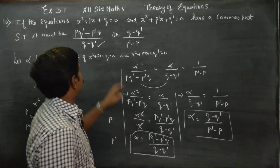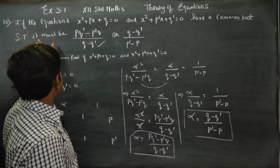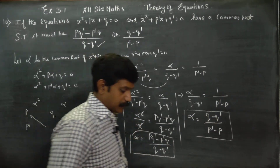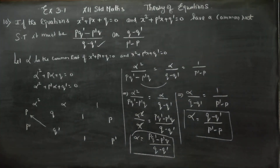Alpha is the common root and the common root answer shows it must be one of these two results. Exactly — using the 10th standard cross multiplication method you will get the answer. Thank you.